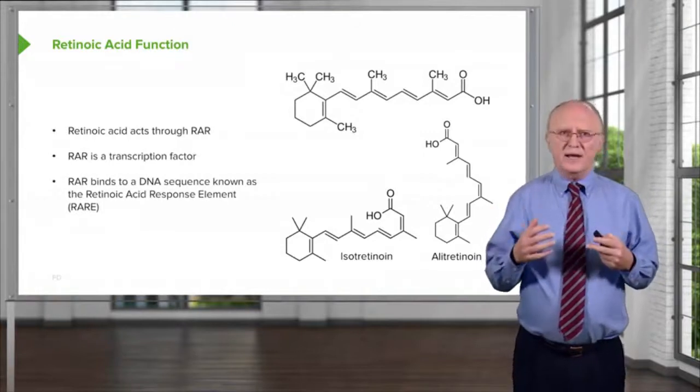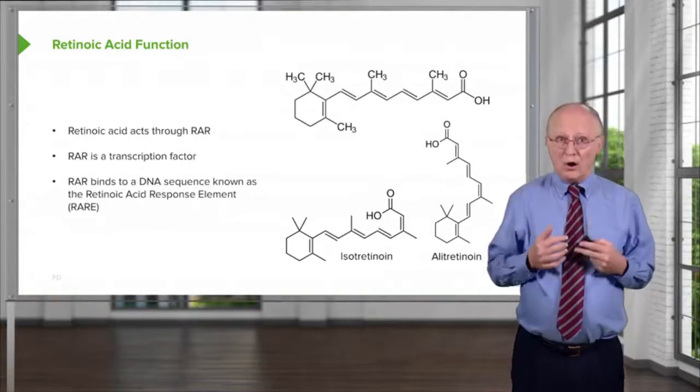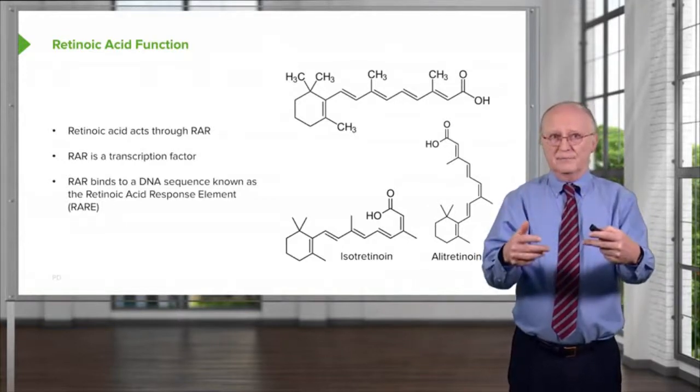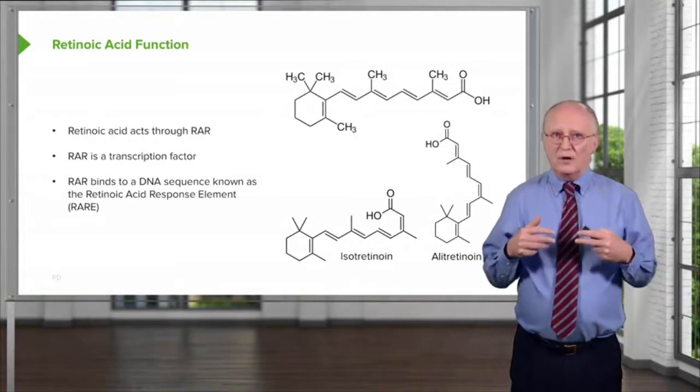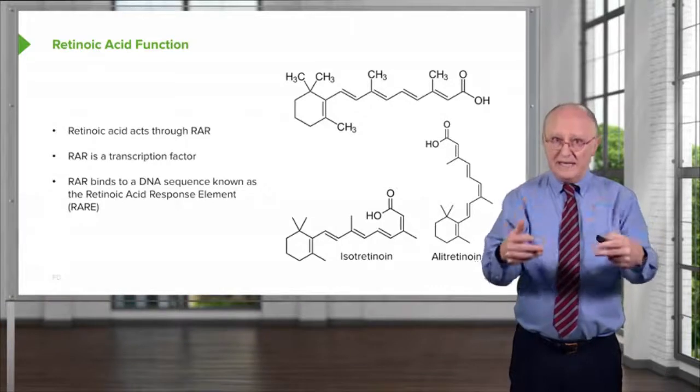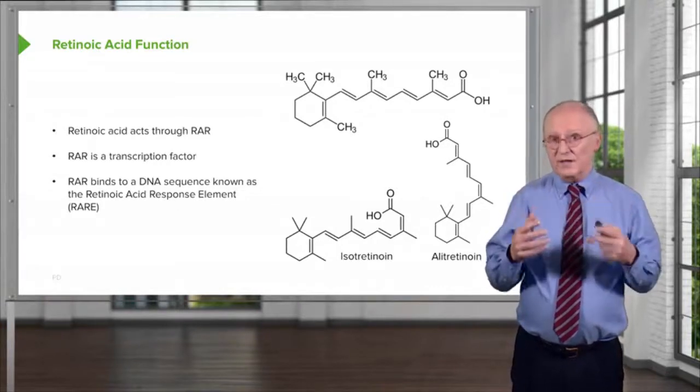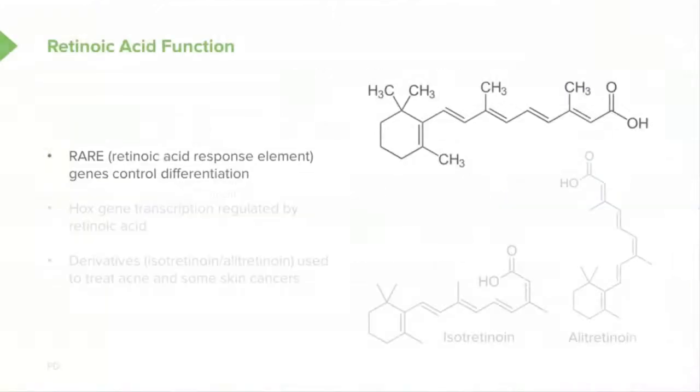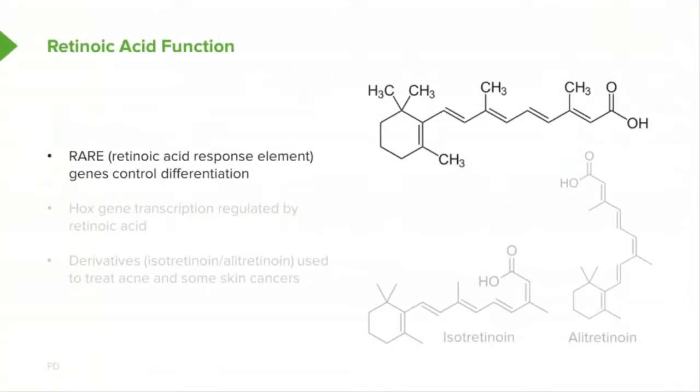The sequence that RAR binds to is known as RARE, R-A-R-E, or retinoic acid response element. RARE genes are genes that are involved in the process of development, and it's for this reason that retinoic acid is so strongly teratogenic. The retinoic acid response element controls genes involved in differentiation.